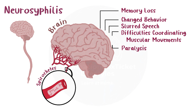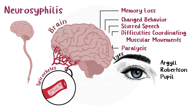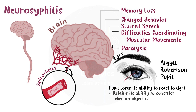Spirochetes can cause memory loss, changed behavior, slurred speech, difficulties coordinating muscular movements, and even paralysis if they enter the capillaries that supply the brain. A person with syphilis may even experience an Argyll-Robertson pupil, in which the pupil loses its ability to react to light but retains its ability to constrict when an object is close by, and does nothing in very bright light.